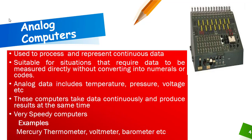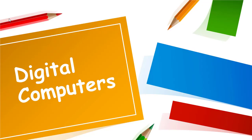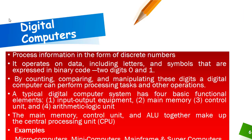Whatever devices measure temperature, pressure, voltages, and weight are all analog devices. These computers take data continuously and produce results at the same time, which means they are very speedy computers. Examples include the mercury thermometer, voltmeter, and barometer.